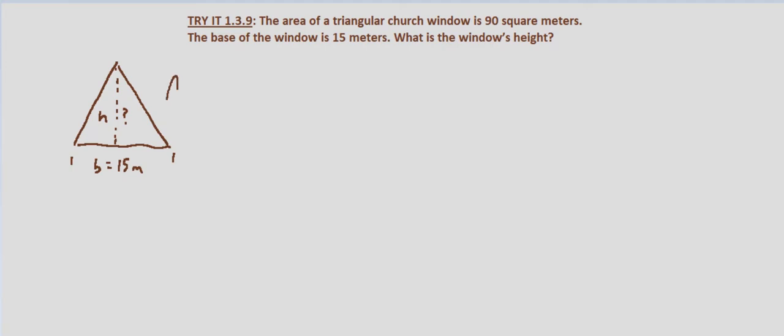And we're given that the area equals 90 square meters. And we're asked what is the height. So we're looking for the height. So remember that area of a triangle equals one half times the base times the height.